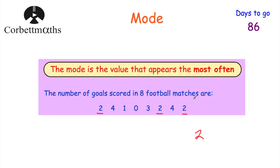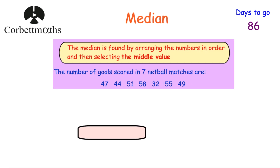So the 2 is the mode because it appears the most often. The modal number of goals scored is 2. Next we're going to look at the median. The median is found by arranging the values in order and then selecting the middle value. For instance, here we've got the number of goals scored in seven netball matches: 47, 44, 51, 58, 32, 55 and 49.